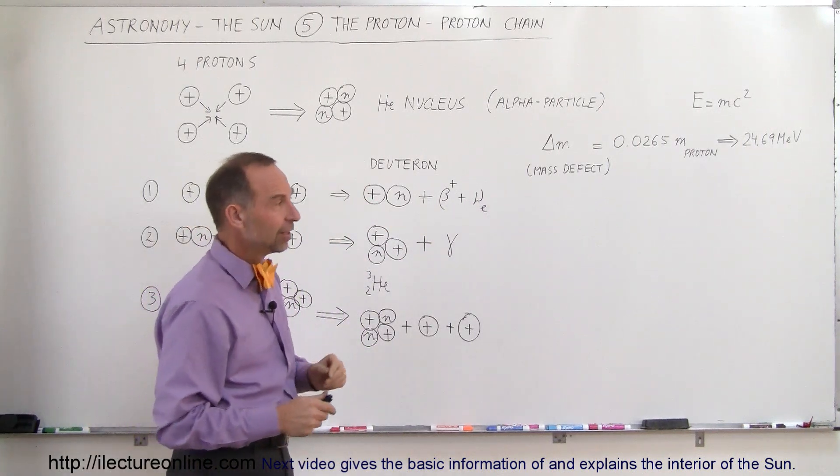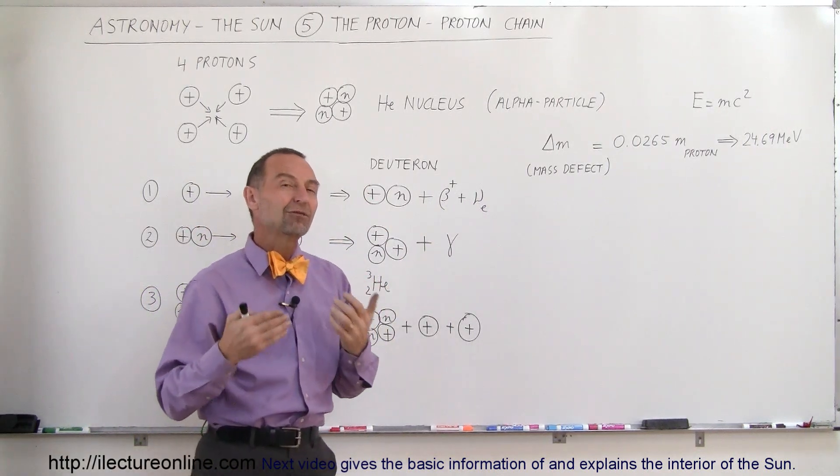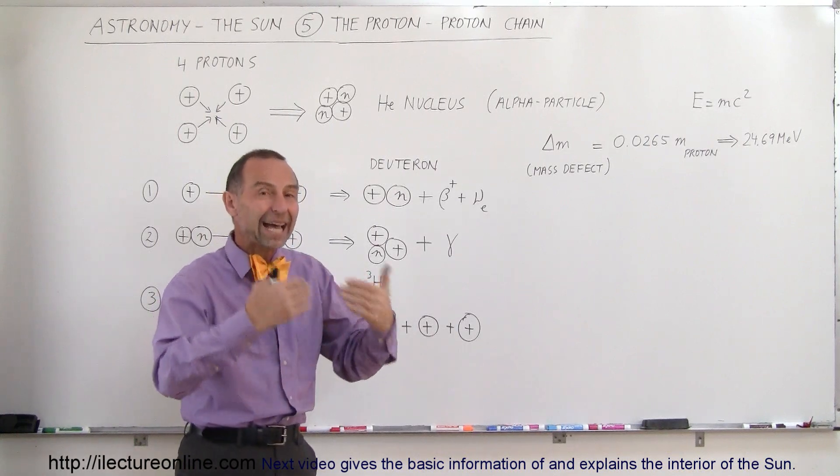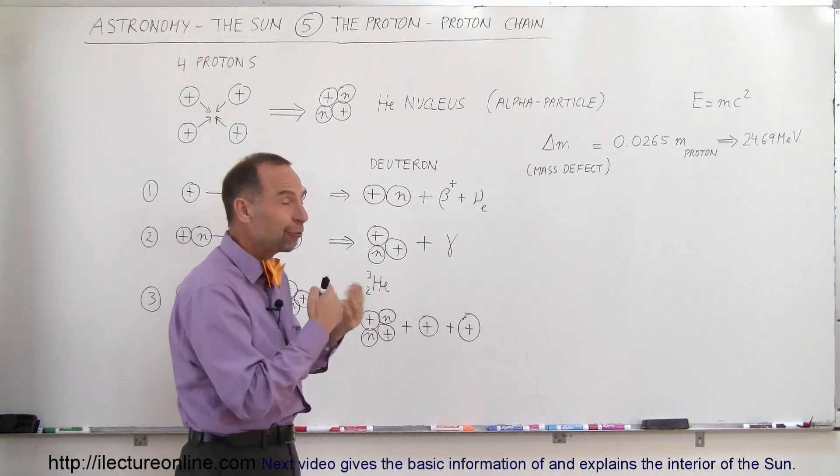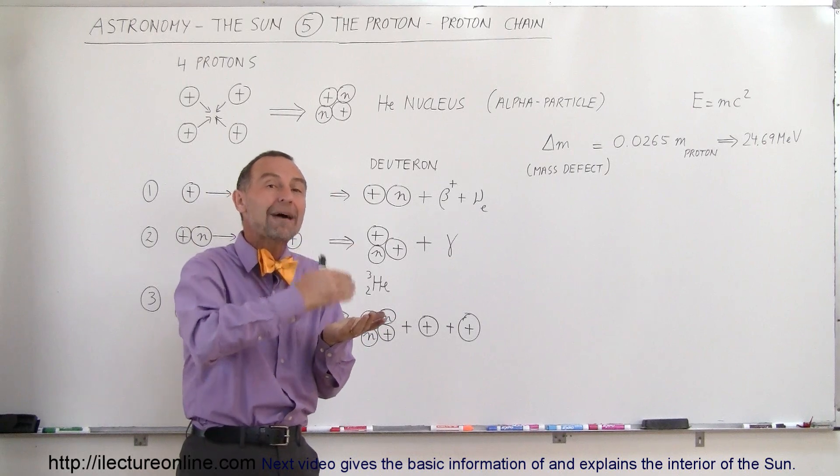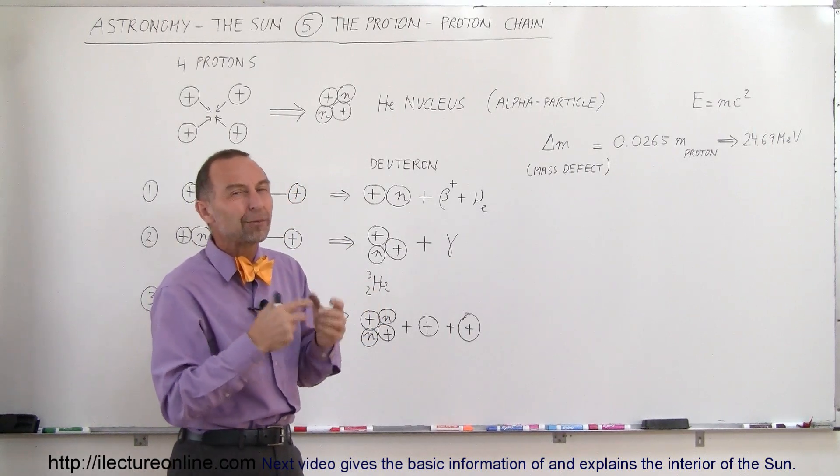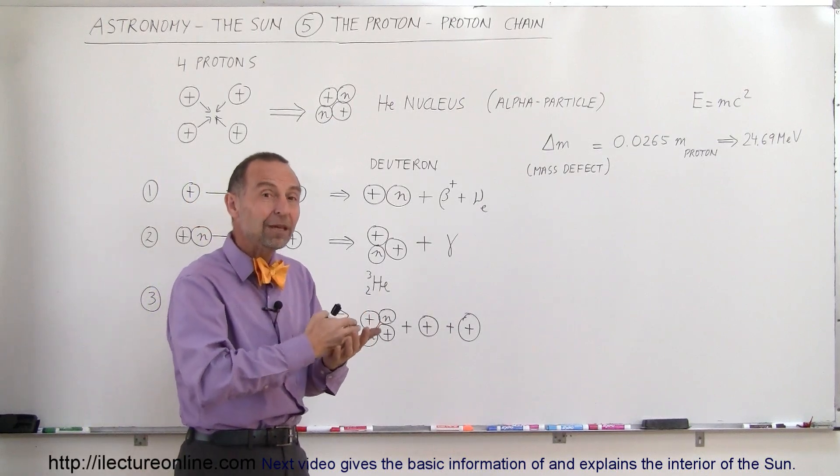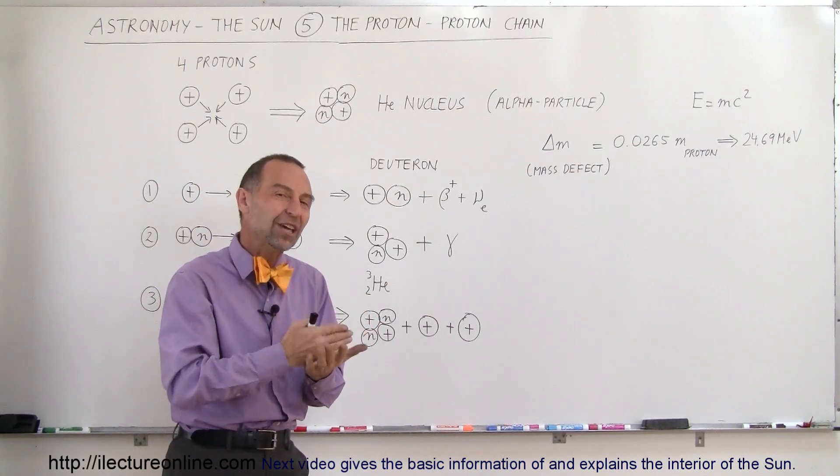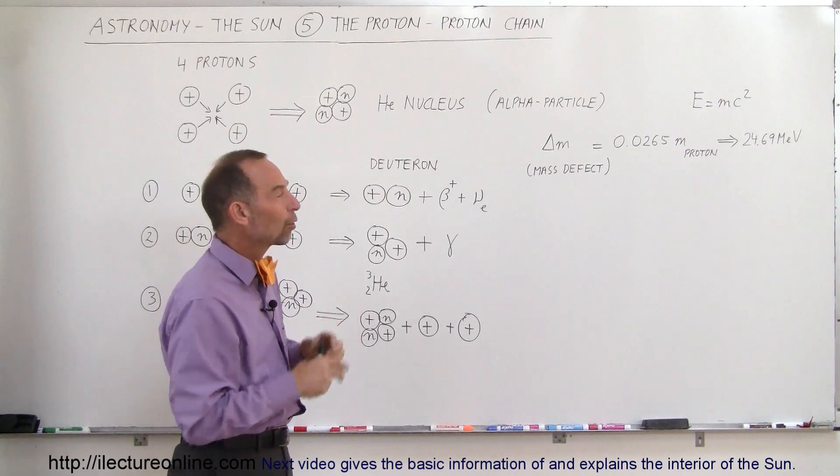Every second of every day for the last 4.6 billion years, the sun has been converting hydrogen into helium and therefore producing energy by the mass to energy conversion. About 4 billion kilograms, about 9 billion pounds of matter is being converted to energy every single second in the core of the sun.